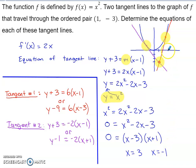What I've just identified is the x-coordinate of this point in the first quadrant is positive 3, and the x-coordinate of this point in the second quadrant is negative 1.